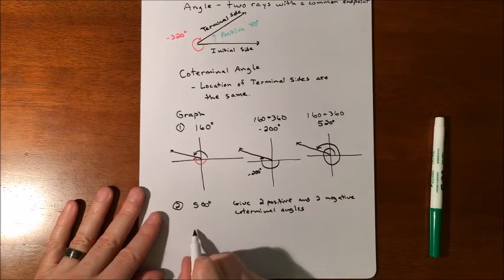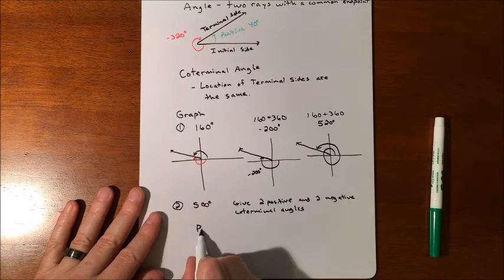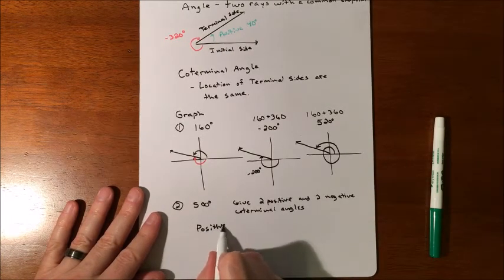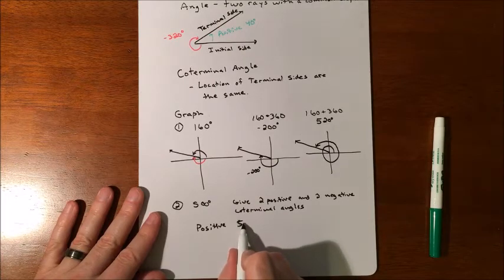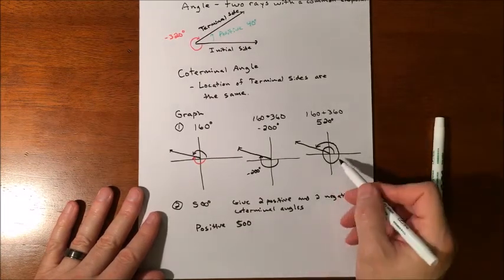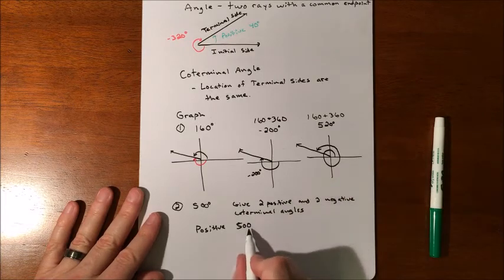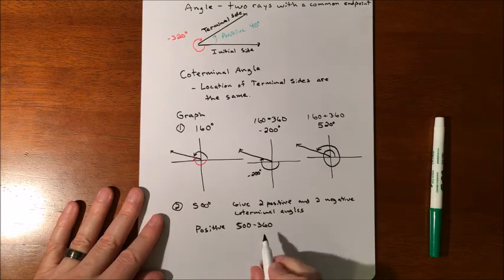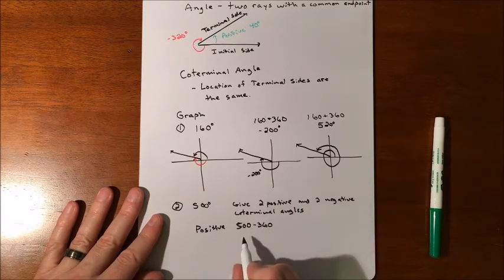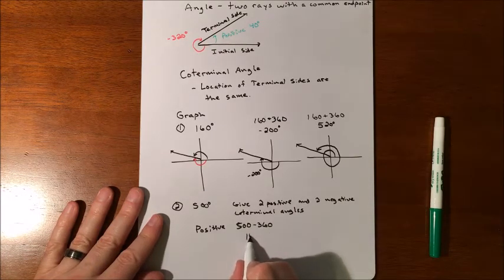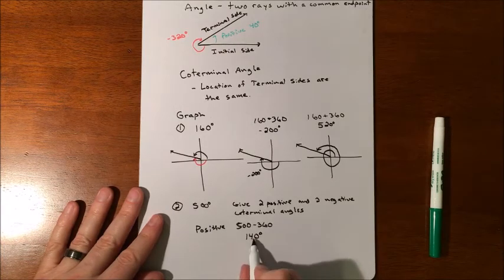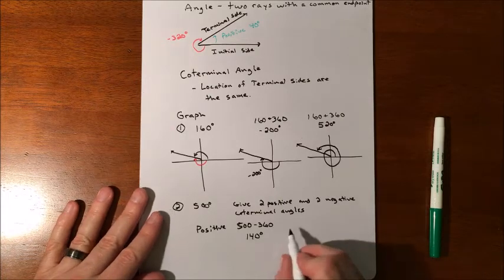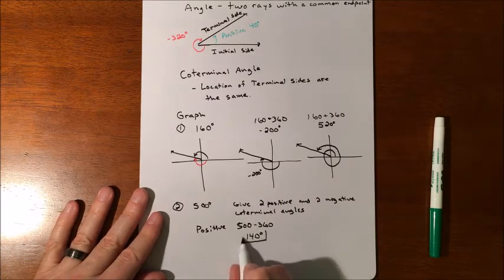So to figure that out, you can just basically take if you want positives, you could go 500, and since you're more than one time around, you can basically take that 500 and subtract 360, and that's going to give you one example of a positive coterminal. So 140 degrees. Now the problem is if you subtract another 360, you're not going to be in the positives anymore. So to find another positive, this would be one.